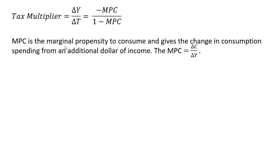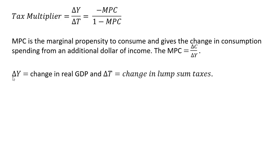The MPC, the marginal propensity to consume, gives the change in consumption spending from an additional dollar of income. The MPC equals the change in consumption spending divided by the change in income. Change in Y is the change in real GDP, change in output, change in income, and change in T is the change in taxes. We're technically dealing with lump sum taxes.